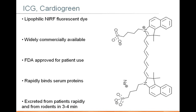ICG in particular has a unique property where, as a fluorophore, it's already FDA-approved for patient use. So the types of studies you conduct and the results you get from small animal imaging experiments using ICG can be much more rapidly translated to the clinical setting than with really any other fluorescent probe, simply because it's in the near-infrared and it's already FDA-approved.